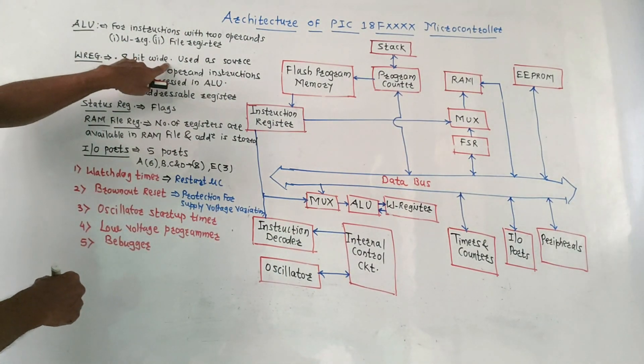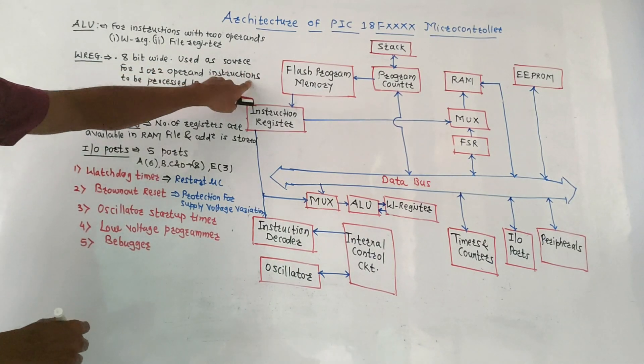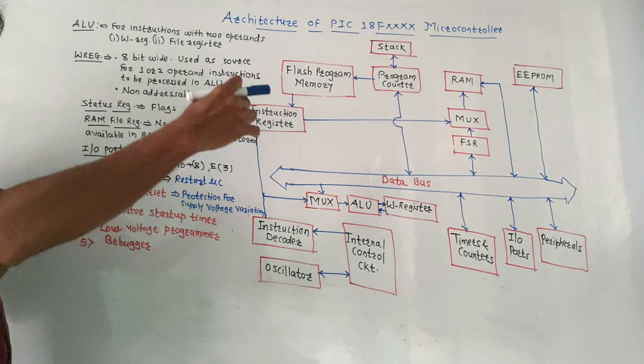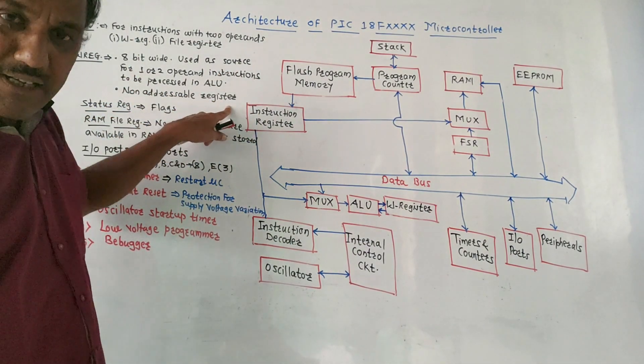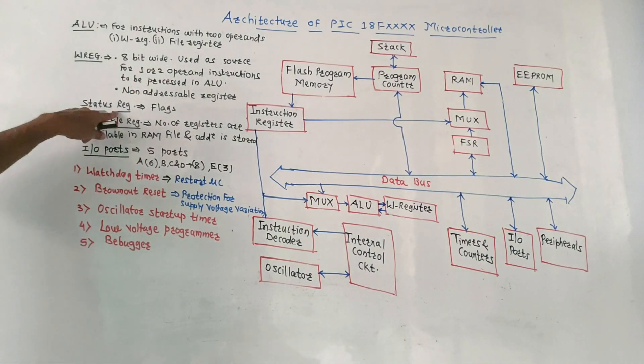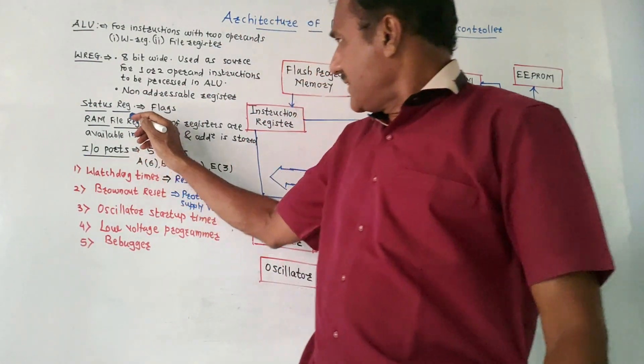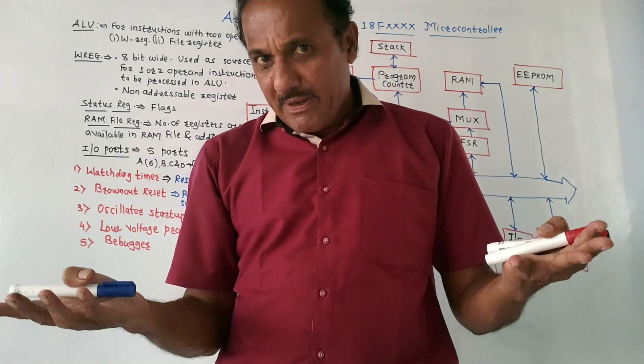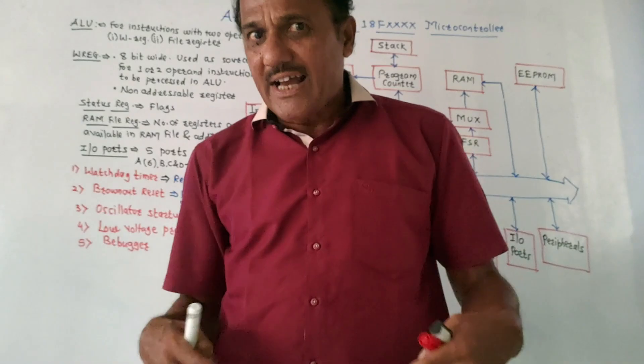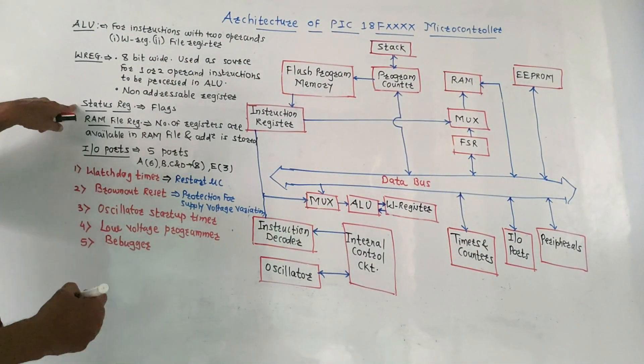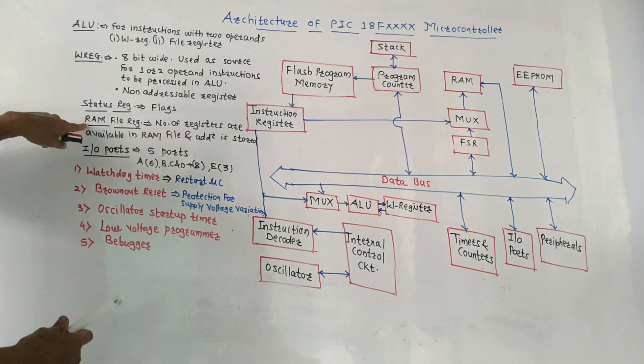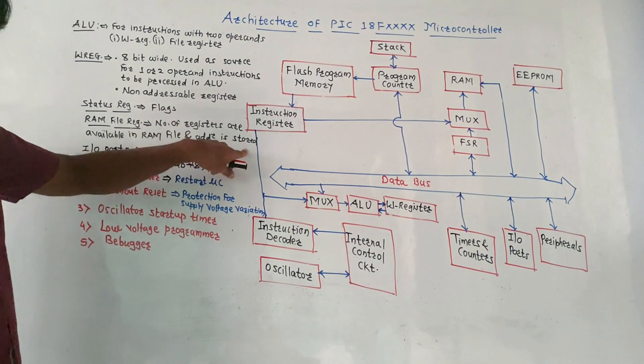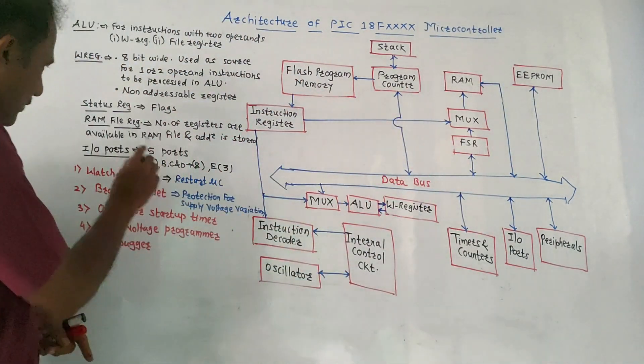W register is 8 bit wide and it is used as source for one or two operand instructions to be processed in ALU. It is not addressable register and its length is 8 bit. Then status register provides a particular status, like carry flag, overflow flag and so on. It also has RAM file register - number of registers are available in RAM file.